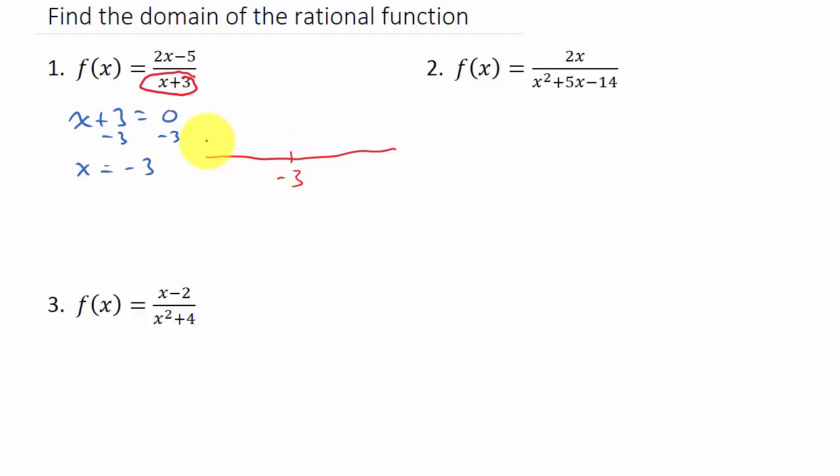It's going to be everything but negative 3. If we look at this on a number line, it's going to look something like this, and we'll have an open circle here at negative 3. It's going to be the entire number line except for this.